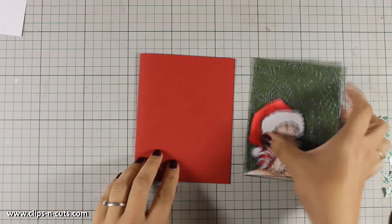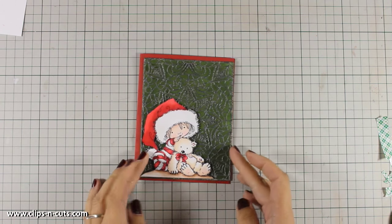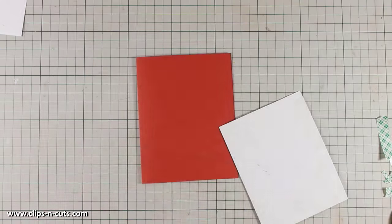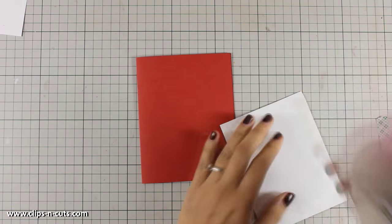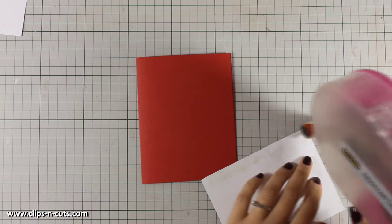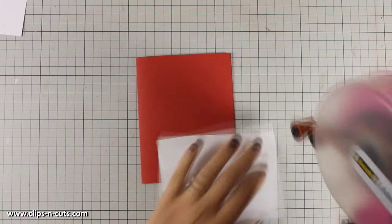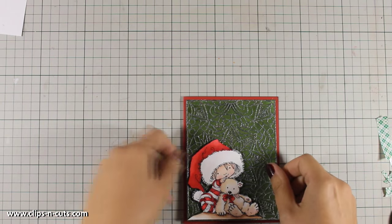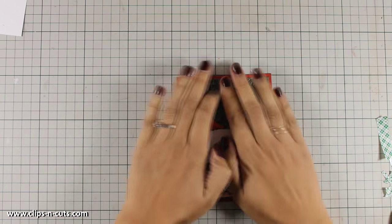For my card base I have chosen a red that matches perfectly the red on my card. It is a side folding card and it's four and a quarter by five and a half. To stick the panel on top I am using my ATG gun and I am being generous just because there are many elements and I want it to be nice and sturdy and hold on for the mail.